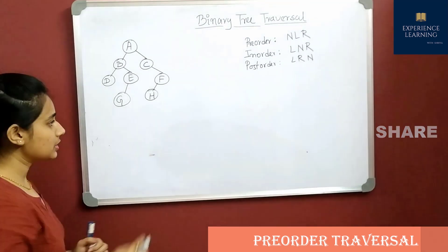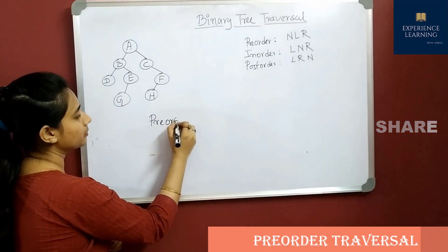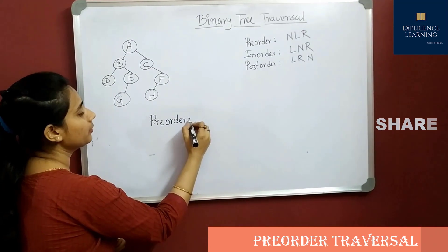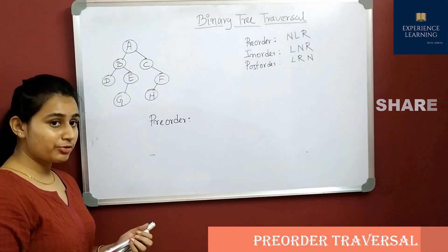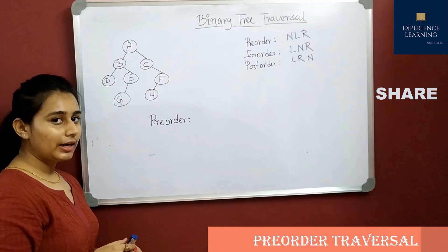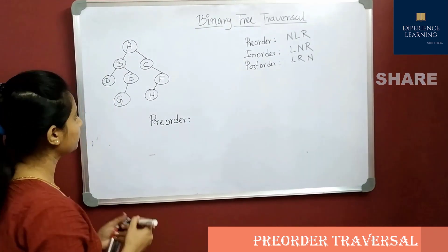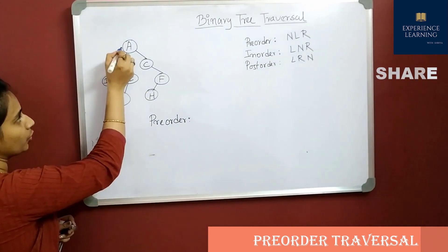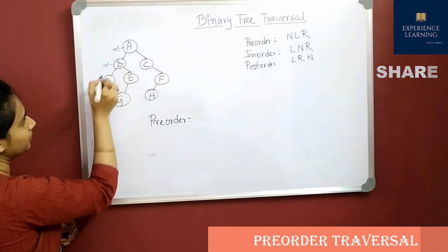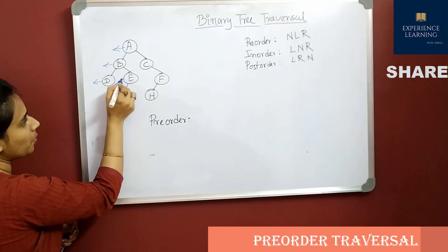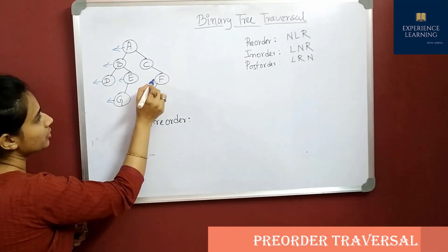First, I'm going to discuss the trick for pre-order traversal. In case of pre-order traversal, draw an arrow in the left direction for each node. For each node, that arrow will be drawn first.